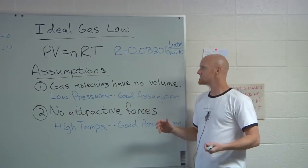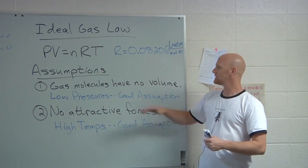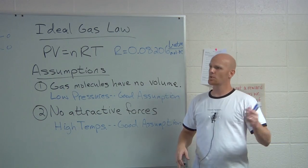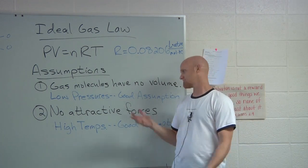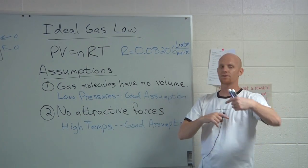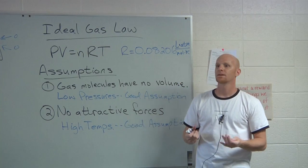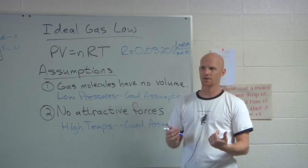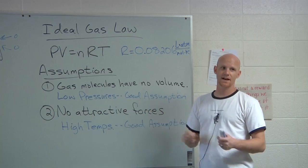Overall, based on these two assumptions, gases tend to behave more ideally at low pressures and high temperatures. This is totally something to remember. You may get a question: under which conditions is a gas most likely to behave like an ideal gas? Find the lowest pressure and highest temperature. Or they may ask which conditions cause the most deviation from ideal behavior — then pick the highest pressure and lowest temperature.